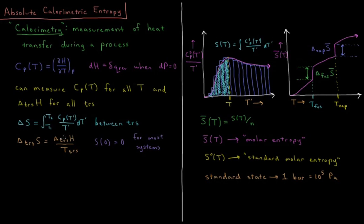Then we measure the heat that occurs going from liquid to gas, divide that by the temperature. That gives us the entropy of vaporization, and then gas for temperatures above that vaporization temperature.